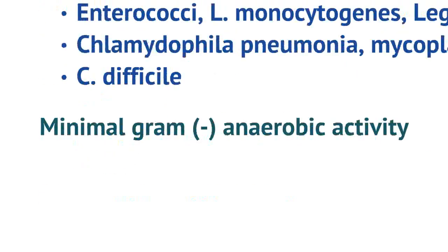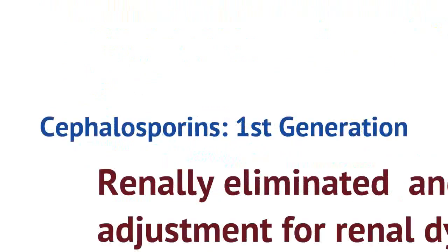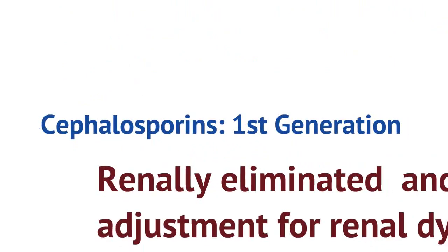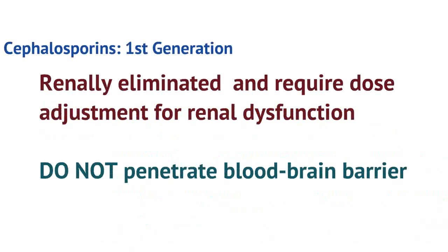Keep in mind that first gen cephalosporins have minimal gram-negative anaerobic activity, so if you need to cover gram-negative anaerobes, you'd likely need to add a second agent. First gen cephalosporins are renally eliminated and require dose adjustments if a patient has acute kidney injury or chronic kidney disease. They do not penetrate the blood-brain barrier, so they cannot be used for CNS infections like meningitis.